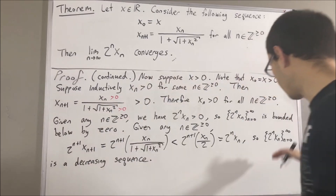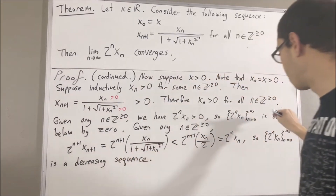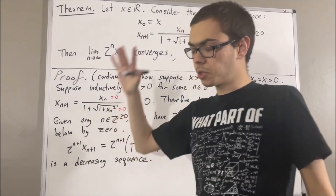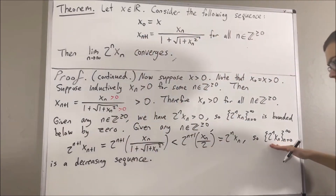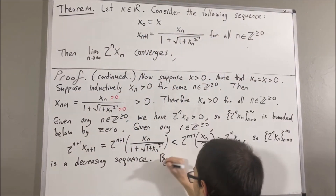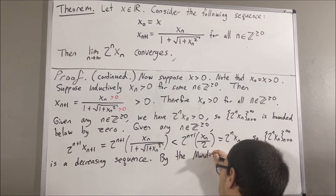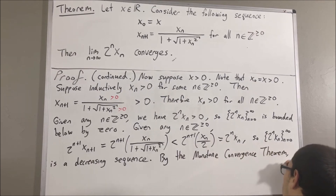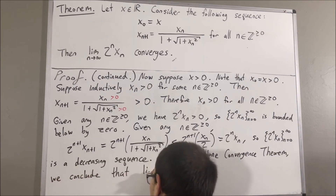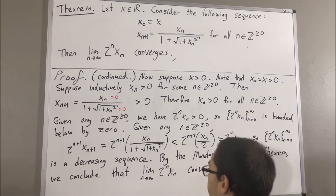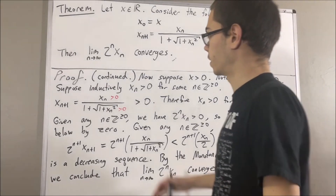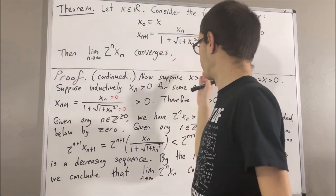Since this is a decreasing sequence that is bounded below, by the monotone convergence theorem, this sequence converges. This covers the case x is greater than 0. Now let's move on to our final case, x is less than 0.